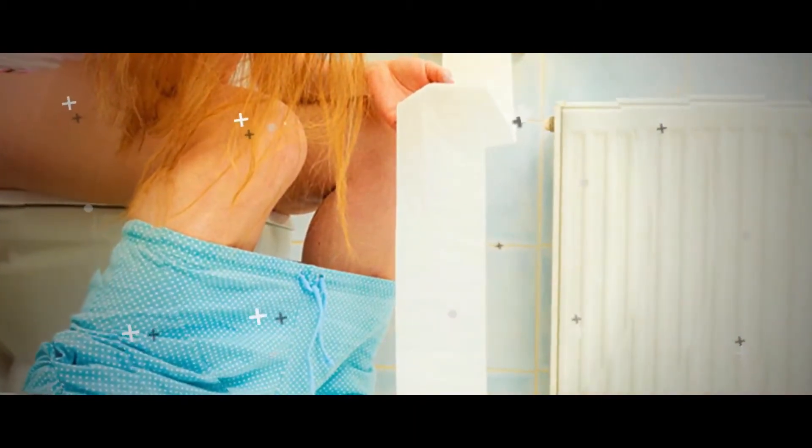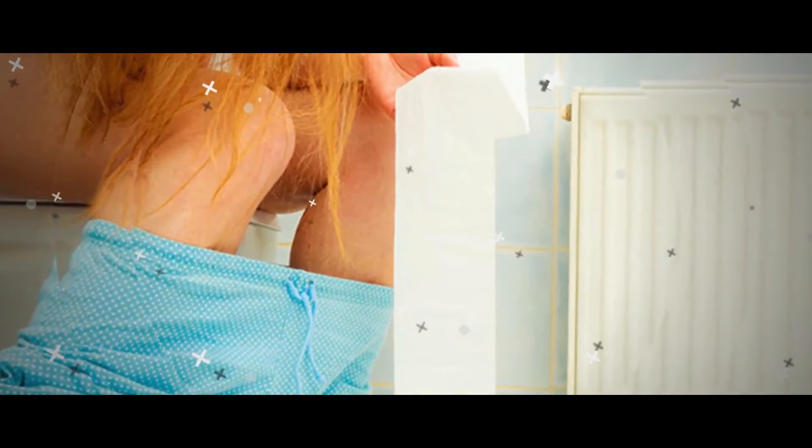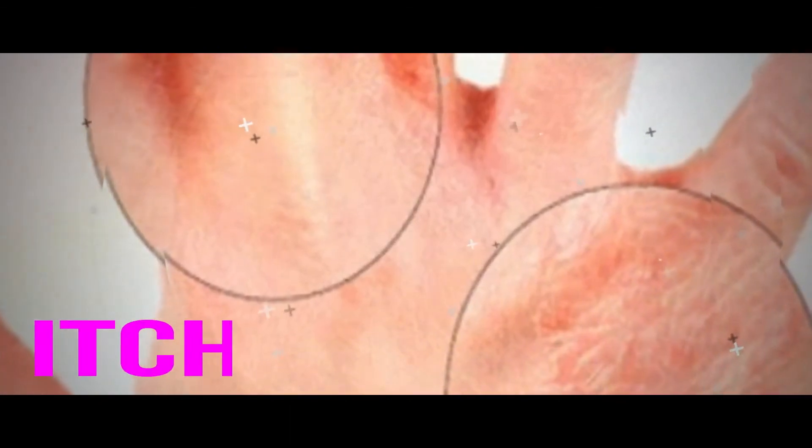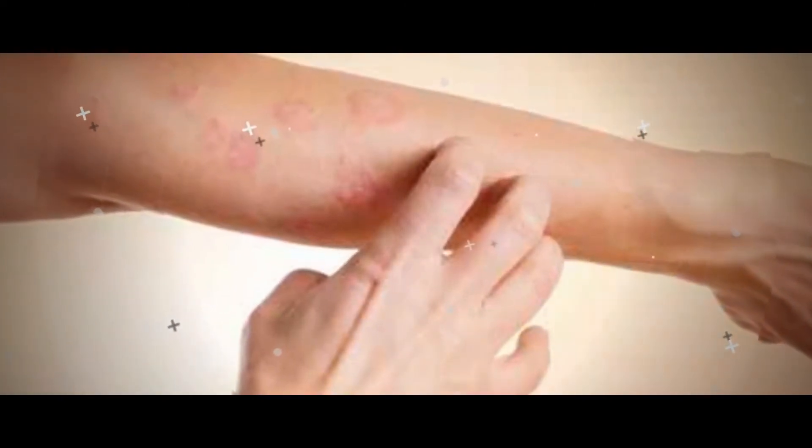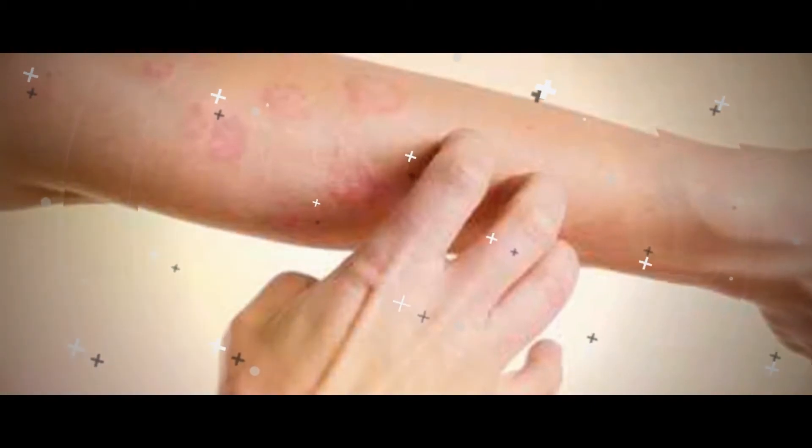Itch: The Mayo Clinic lists liver disease as an underlying cause of itchy skin, as well as kidney failure, thyroid problems, and cancer. The itching usually affects the whole body. The skin may look otherwise normal except for the repeatedly scratched areas.